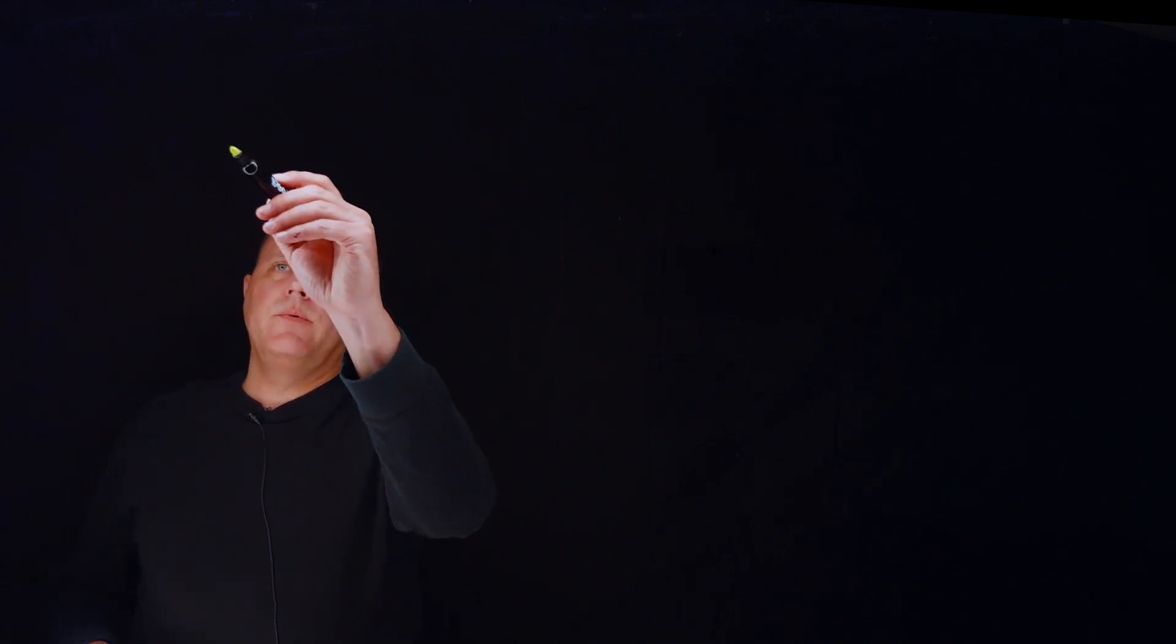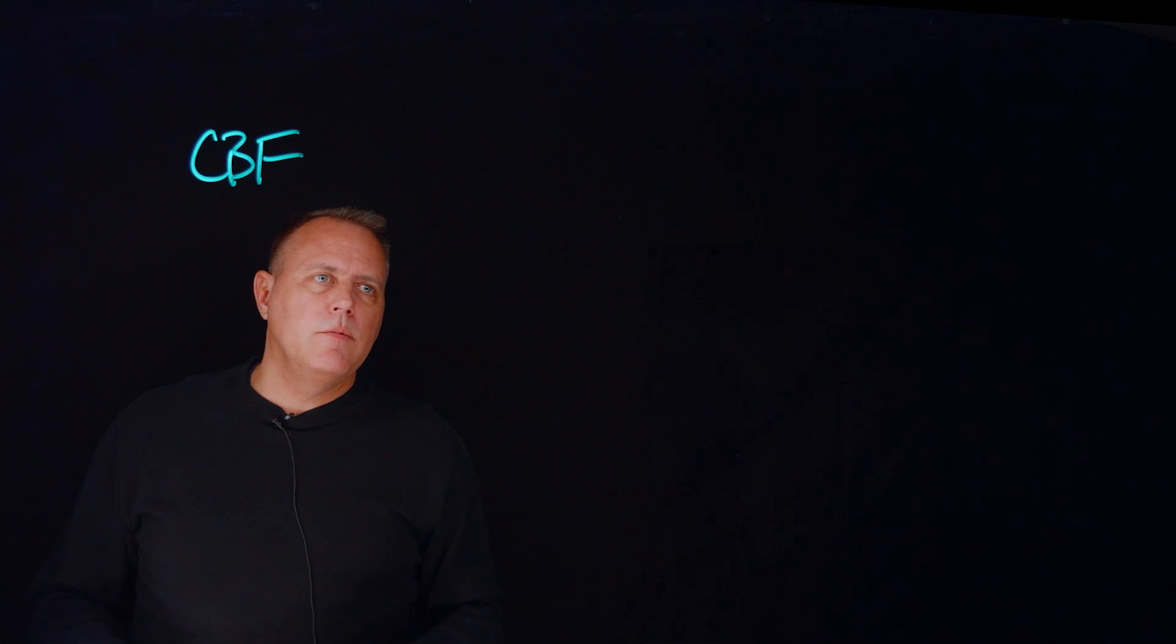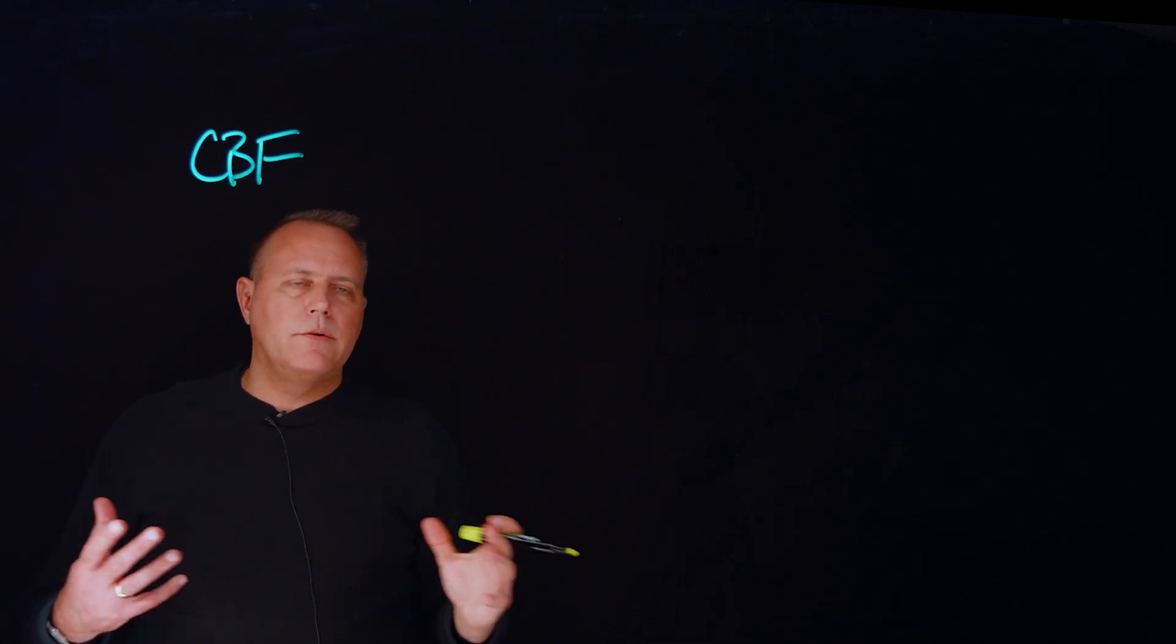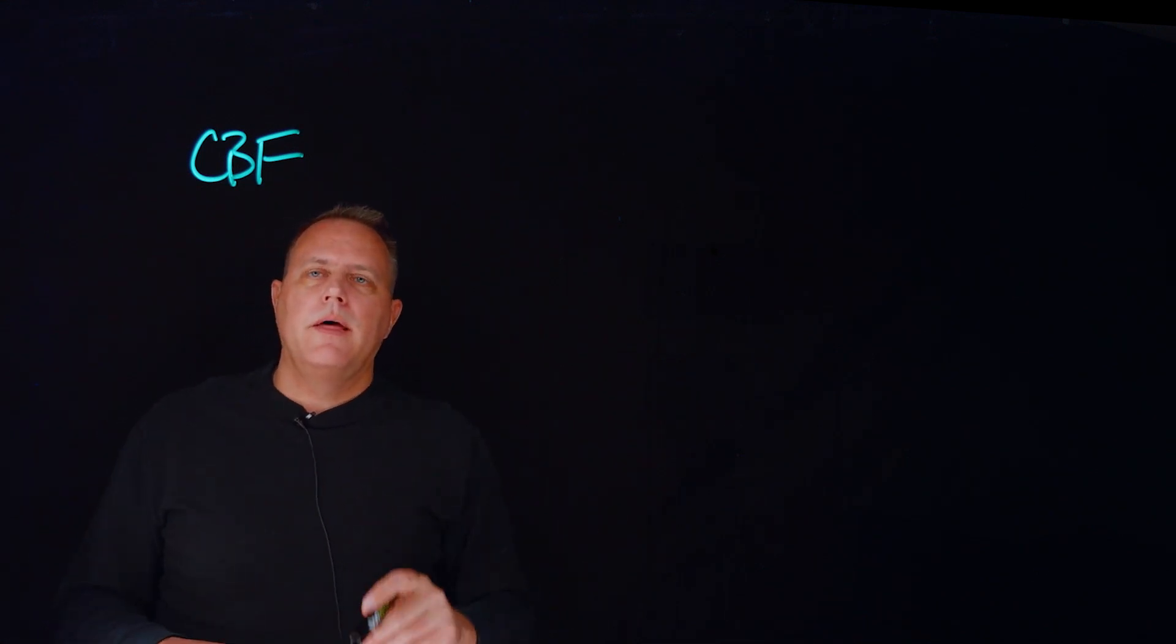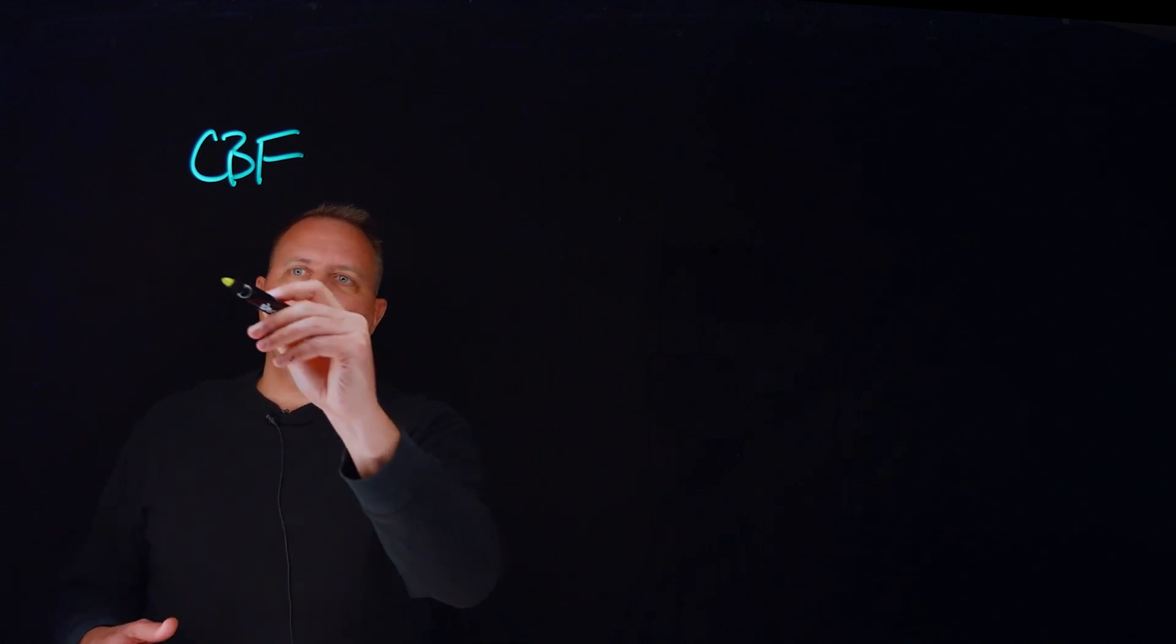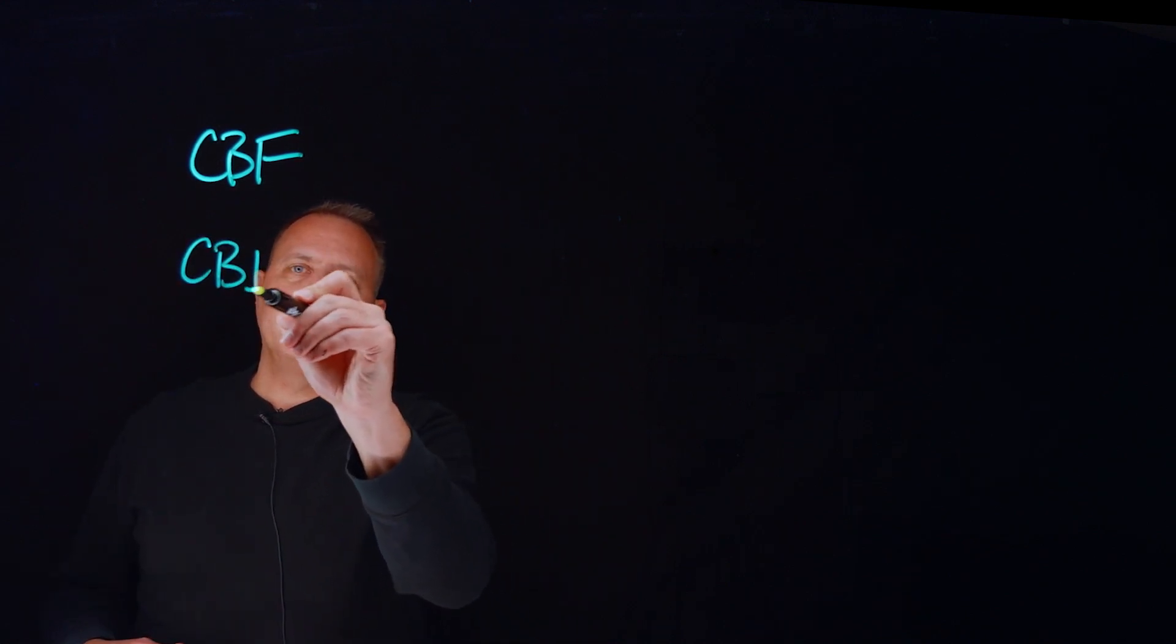If you imagine, we think of what we call a central body fixed frame, which is locked to the central body that we're on and rotating with it. And then we usually have some sort of inertial frame. We call it a CBI, central body inertial.